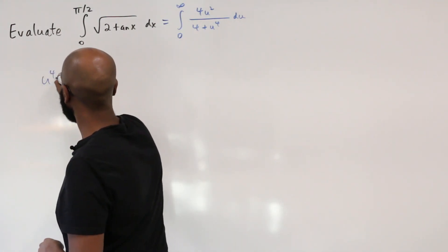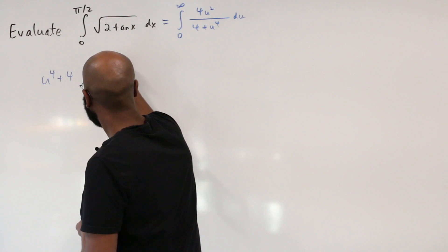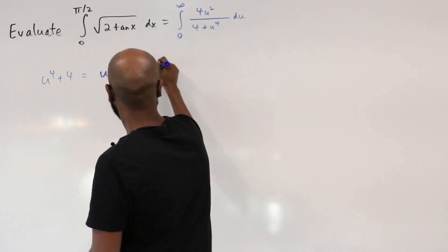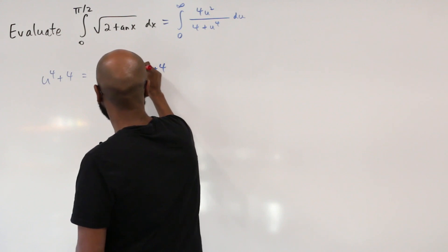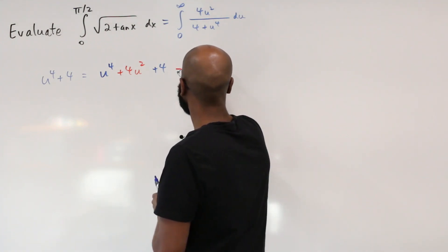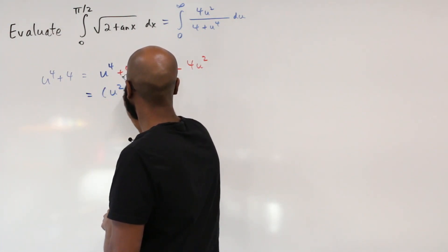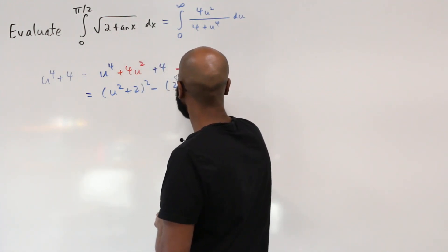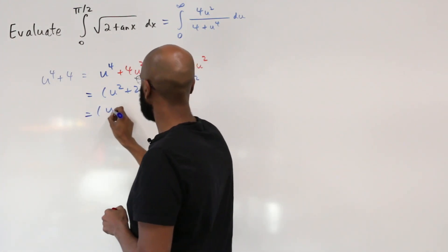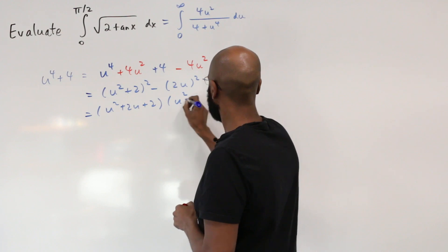To factor u⁴ + 4, we complete the square by adding and subtracting 4u²: we get (u² + 2)² − (2u)², which is a difference of squares. So we factor this as (u² + 2u + 2)(u² − 2u + 2).